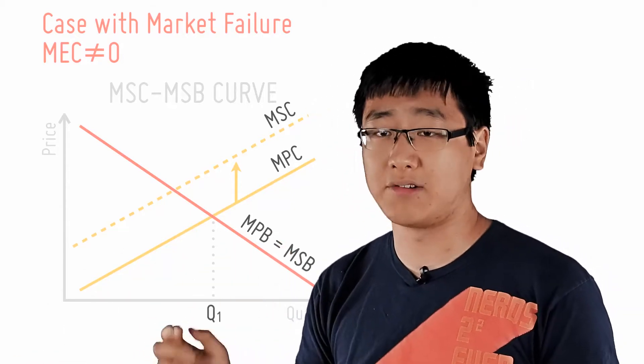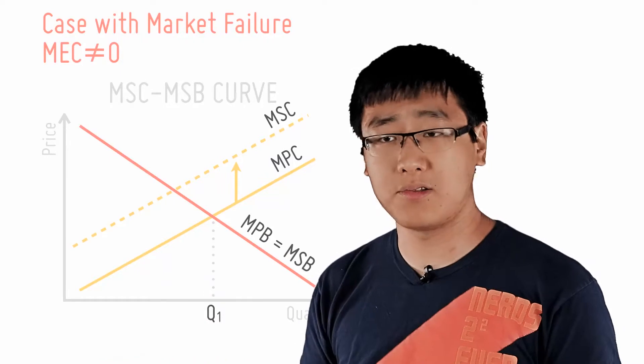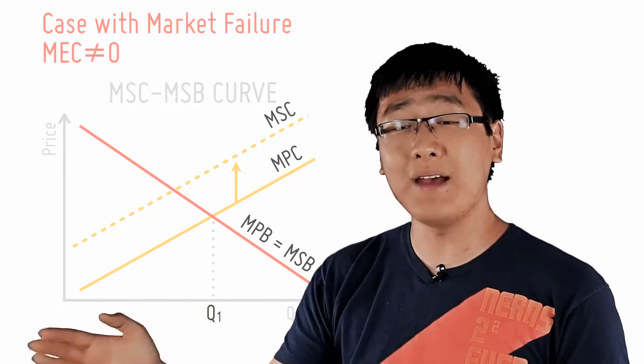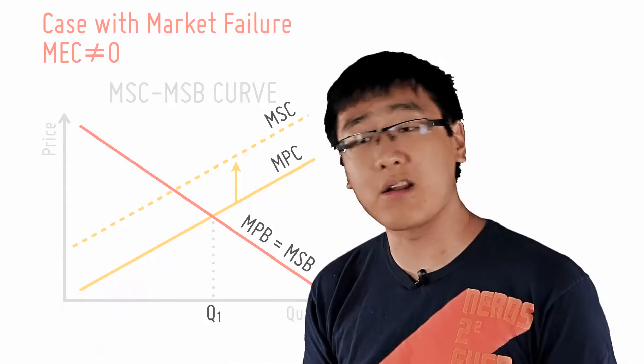Let's try and reflect that in our diagram. Marginal external cost is no longer zero, and the existence of the MEC causes the MSC to shift up by the amount of the MEC.